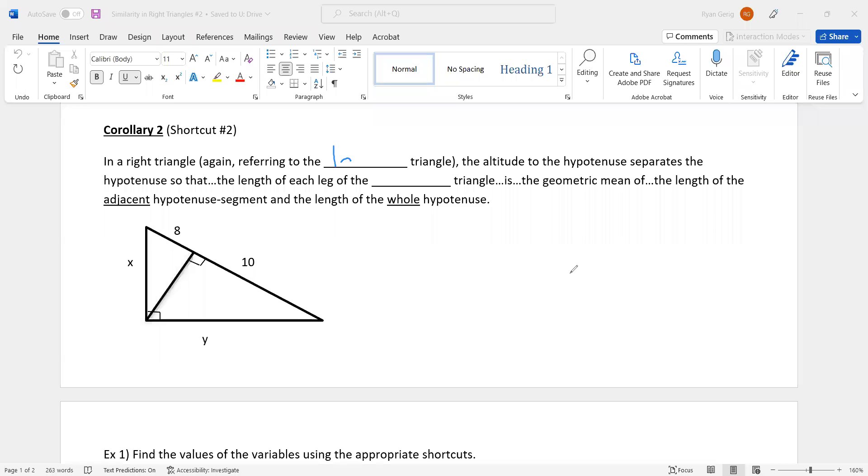In a right triangle, again referring to the large triangle here, the altitude to the hypotenuse separates the hypotenuse so that the length of each leg of the large triangle is the geometric mean of the length of the adjacent hypotenuse segment and the length of the whole hypotenuse. So I have two scenarios here. Scenario one. That's X. We'll just do X first. Basically, I'm going to start right here. The length of each leg of the large triangle. Well, scenario one, X is a leg of the large triangle. The length of a leg of the large triangle. It's the geometric mean. So X is the geometric mean.